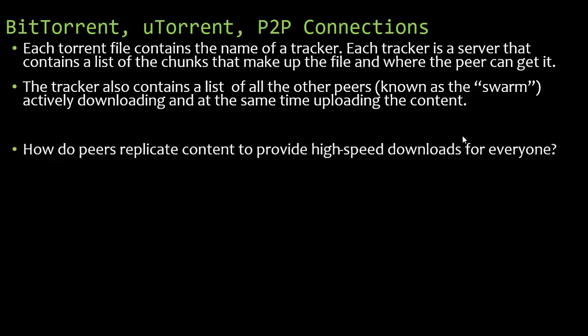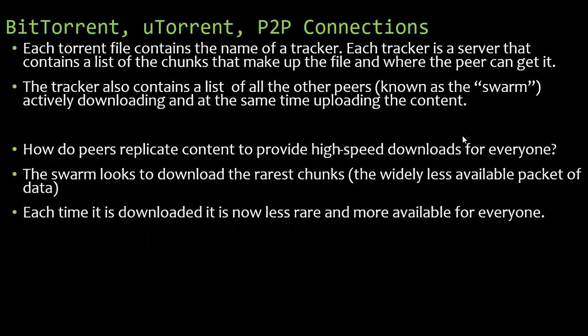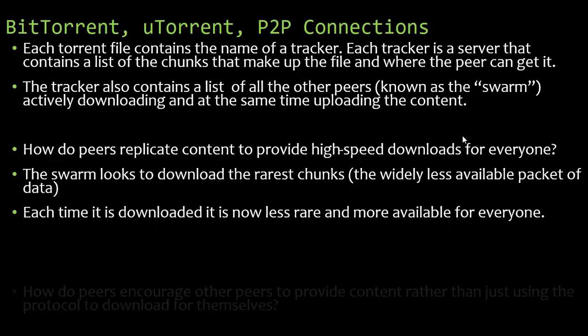The swarm looks to download the rarest chunks first — the least available packet of data. Maybe one person has one packet; we want to distribute that to as many people as possible so it becomes less rare. Rather than downloading that packet from one person, you can download it from multiple people. Each time it's downloaded, it becomes less rare and more available for everyone.